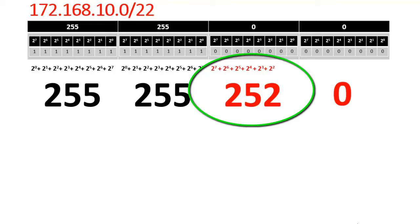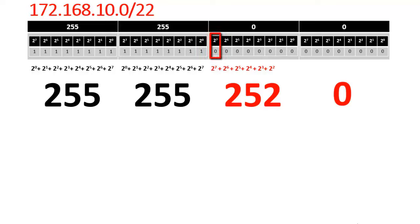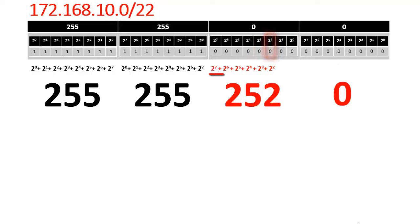The question is where does the number 252 come from. It is the value of the binary bits borrowed from the host. As you can see: 2^7 + 2^6 + 2^5 + 2^4 + 2^3 + 2^2. Once you calculate all these values, the total amount you get is 252.